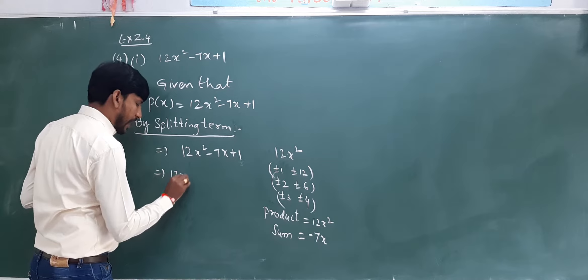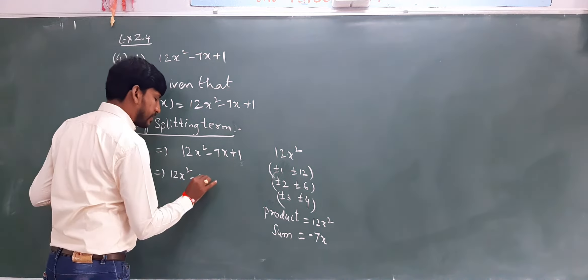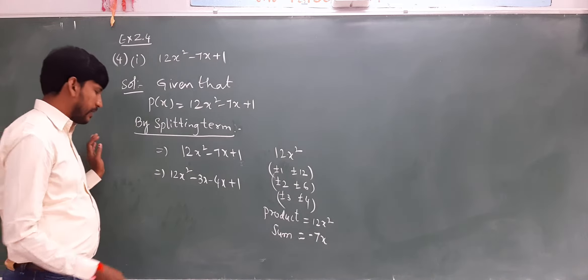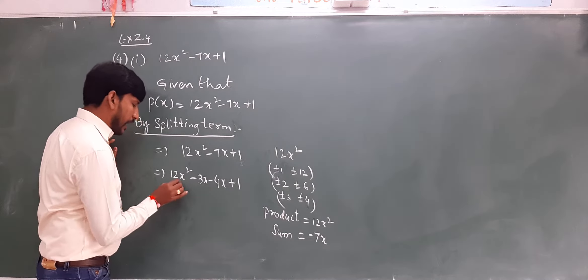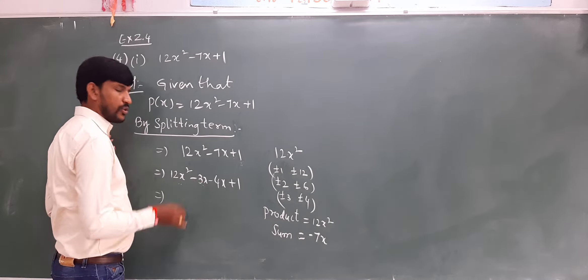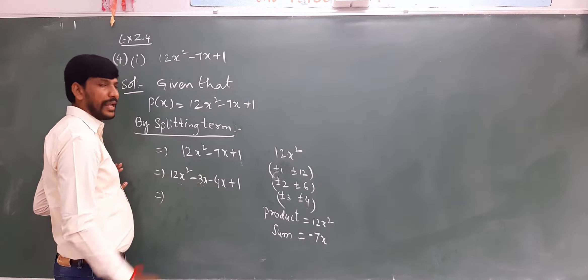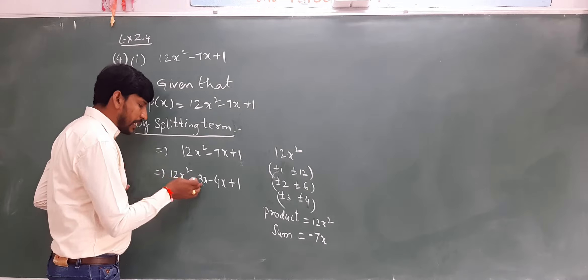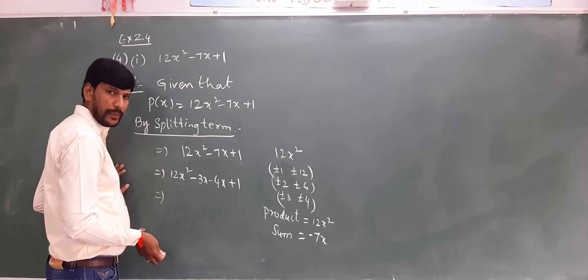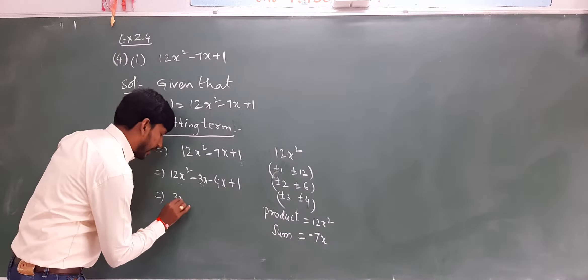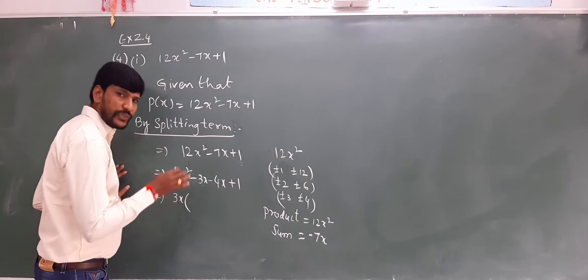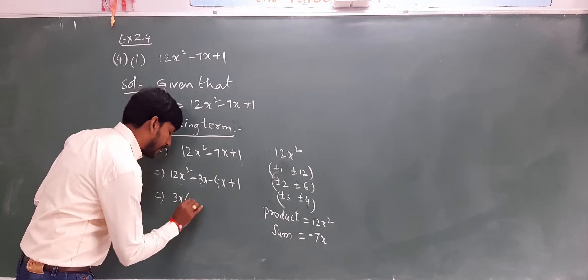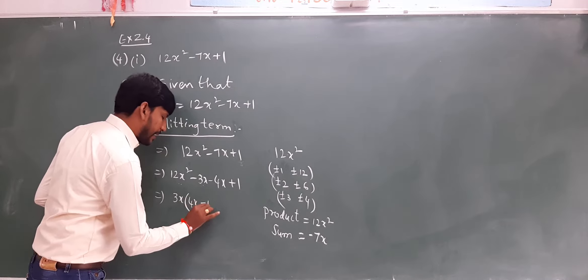This implies 12x² minus 3x minus 4x plus 1. Now in the first two terms, I am going to take 3x as common because 12 is a multiple of 3. If 3x is taken outside as common, the left-over part is 4x. Here, minus 1.